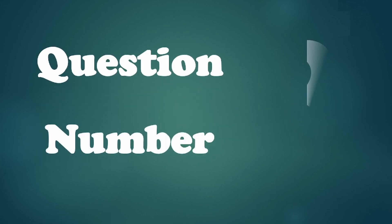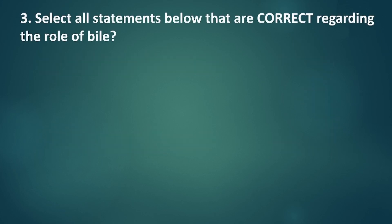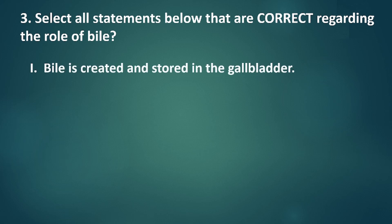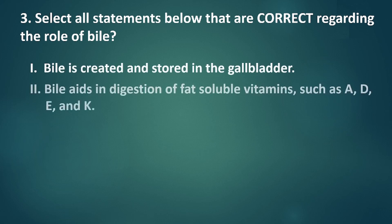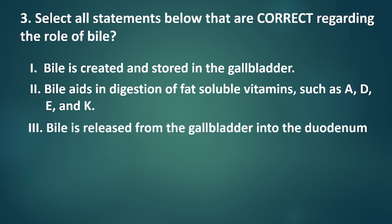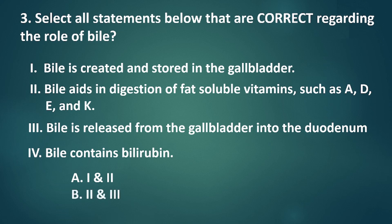Question number 3. Select all statements below that are correct regarding the role of bile. 1. Bile is created and stored in the gallbladder. 2. Bile aids in digestion of fat-soluble vitamins such as vitamin A, D, E, and K. 3. Bile is released from the gallbladder into the duodenum. 4. Bile contains bilirubin. A. 1 and 2. B. 2 and 3. C. 2 and 4. D. All of the above.